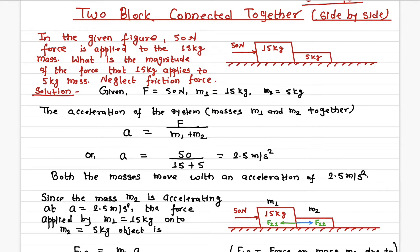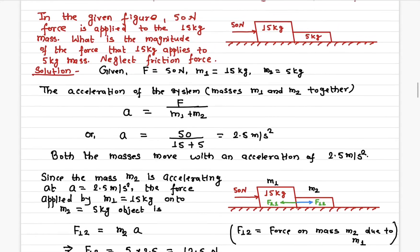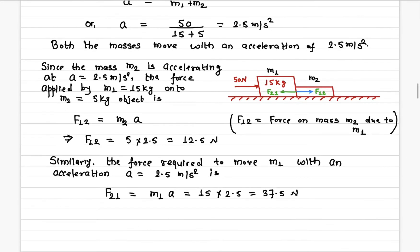Although both masses move with the same acceleration, the forces acting on each individual mass are different. Let's find how much force is required to move the 5 kilogram mass at 2.5 meters per second squared. F12 denotes the force acting onto the second object due to the first — that is, how much force the 15 kilogram mass applies onto the 5 kilogram mass. By Newton's second law, force equals mass times acceleration: the mass of the second object is 5 kilograms and the acceleration is 2.5.